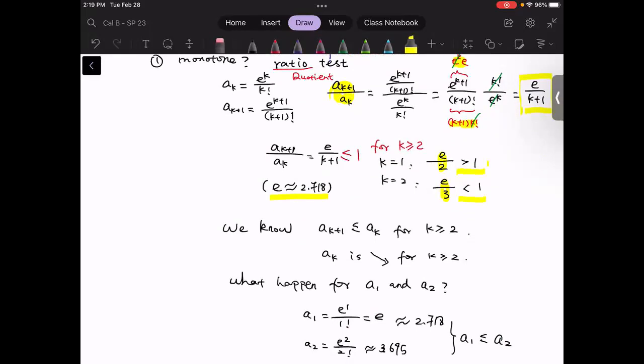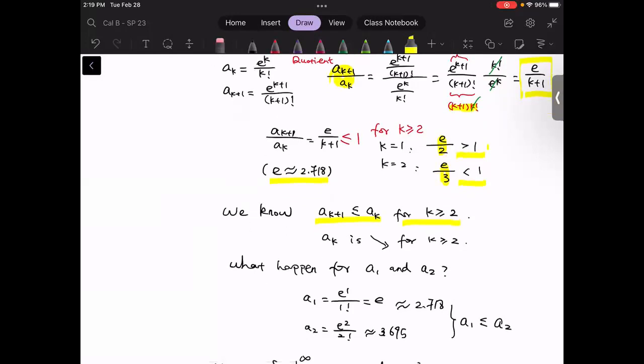Indeed, if we increase the value of k, then the denominator is always greater than the numerator. So we always have less than one. So it tells us that a_(k+1) always less than or equal to a_k. So this is true for all k greater or equal to two. This is not working for k equal to one, which we already seen from here.